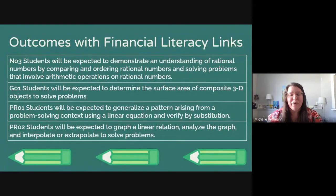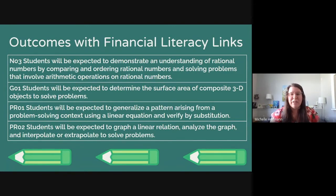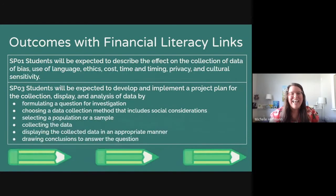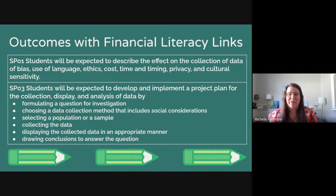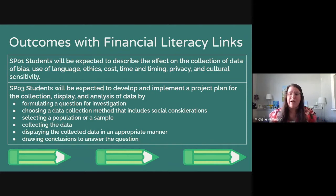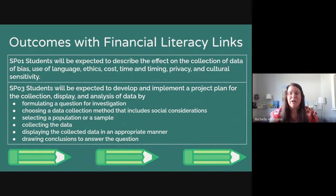From patterns and relations: students will generalize a pattern arising from a problem-solving context using a linear equation and verify by substitution, and students will graph a linear relation, analyze the graph, and interpolate or extrapolate to solve problems. There are also outcomes from statistics and probability that link really nicely with financial literacy as well — some tie-ins you could use in your own classroom to come back to financial literacy or strengthen those outcomes.